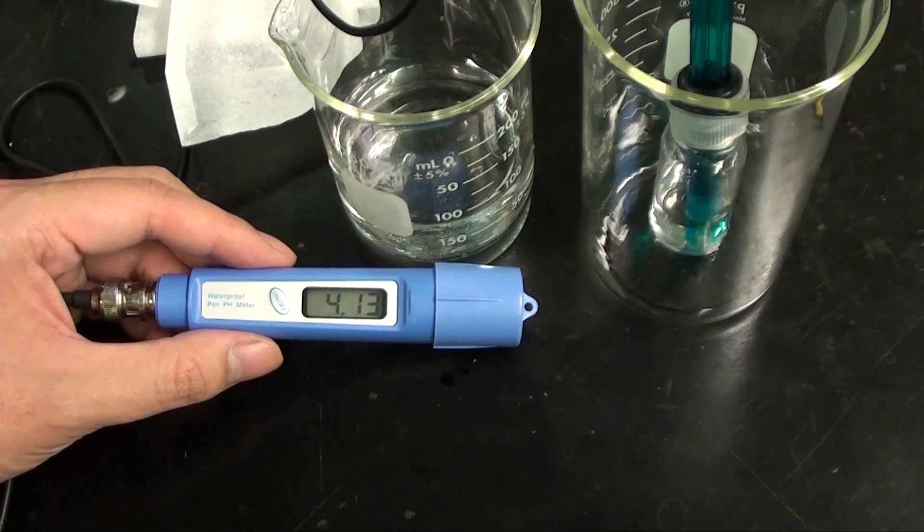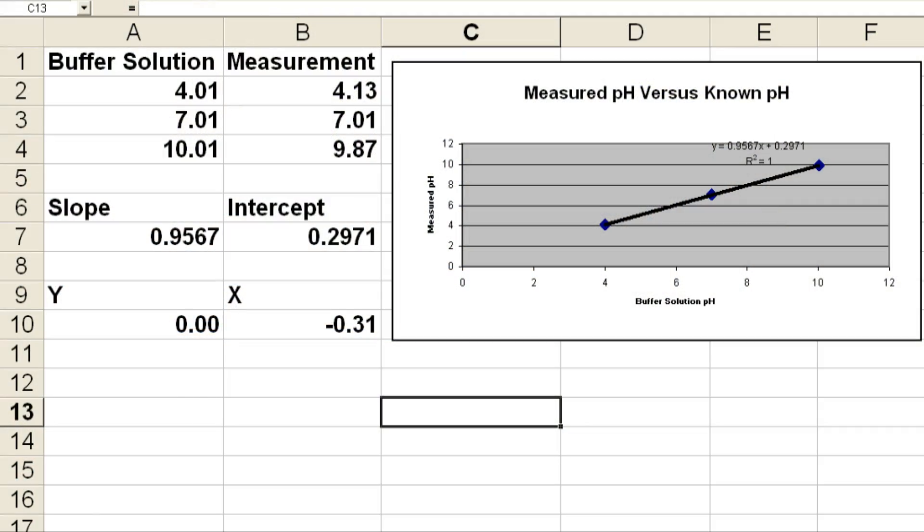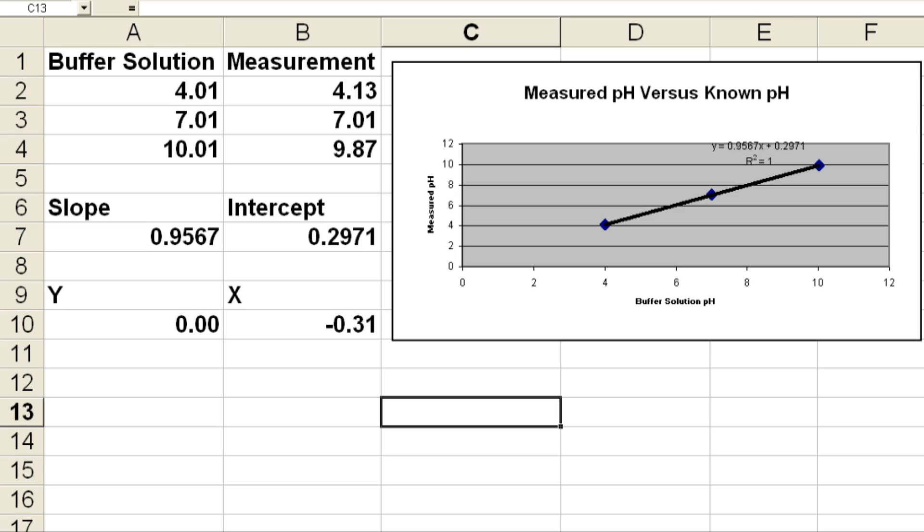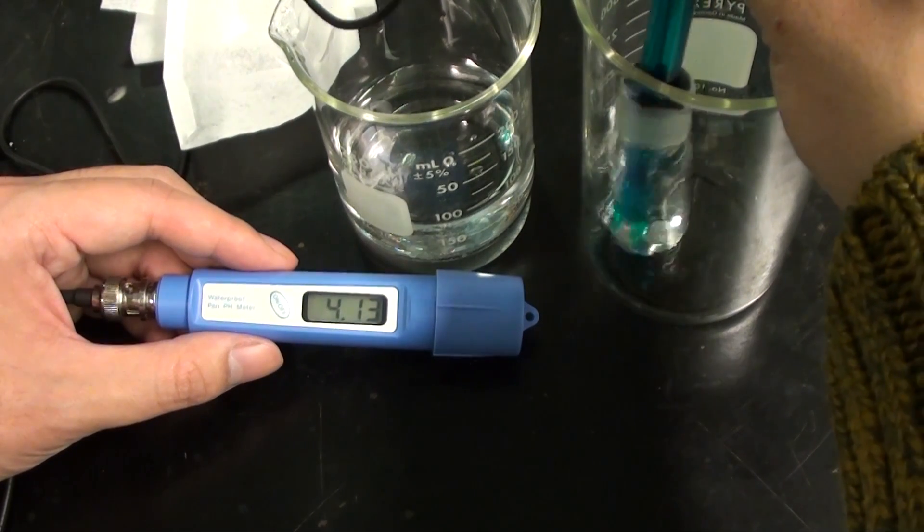Now this error is acceptable for many experiments as the change in pH is more important. But in part two of my video on pH measuring tools, I'm going to show you how to use a calibration curve to compensate for this error. So please subscribe, rate, and comment.